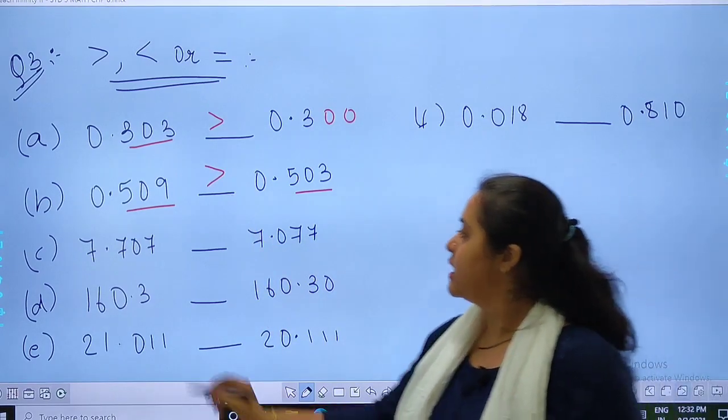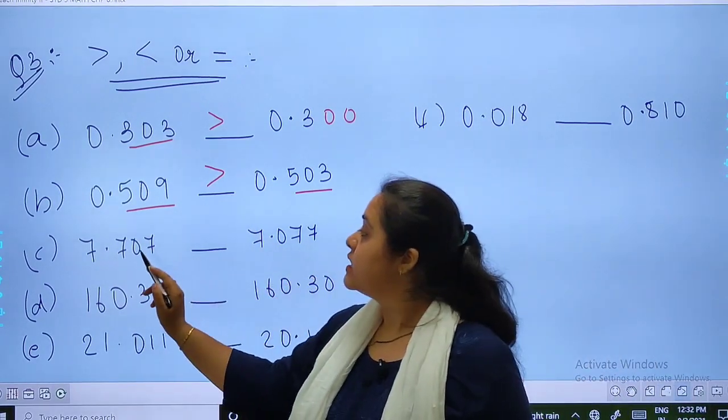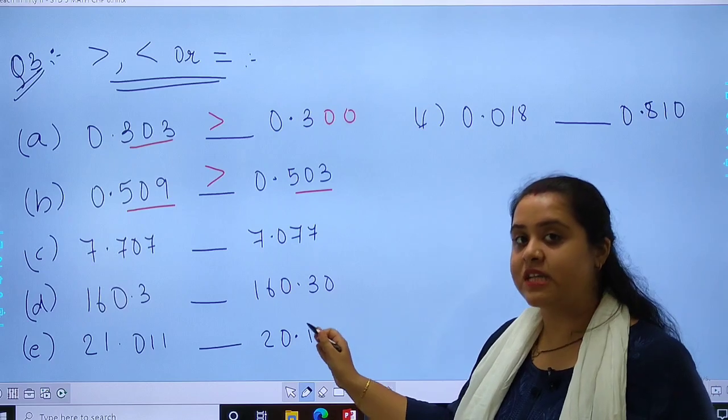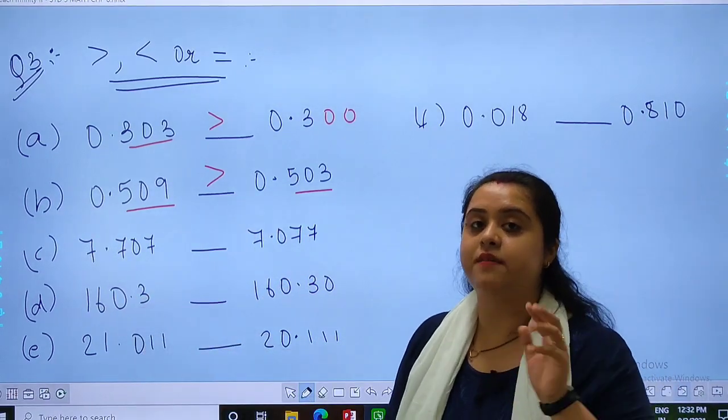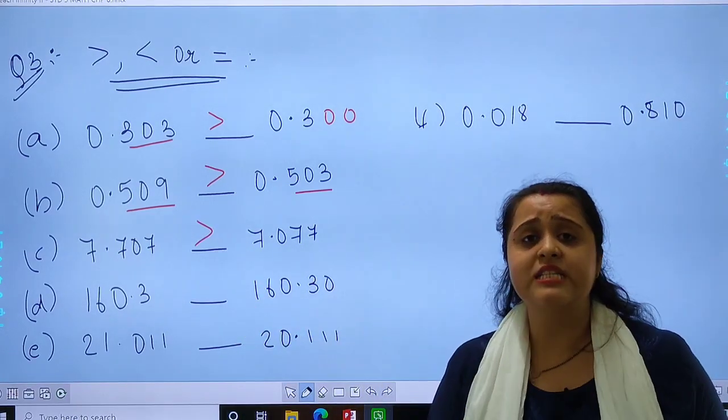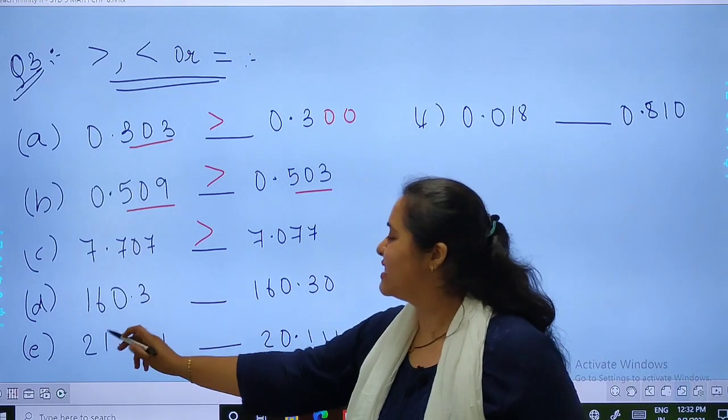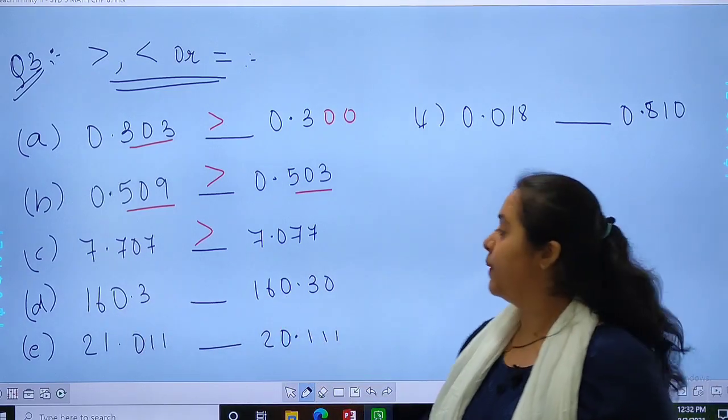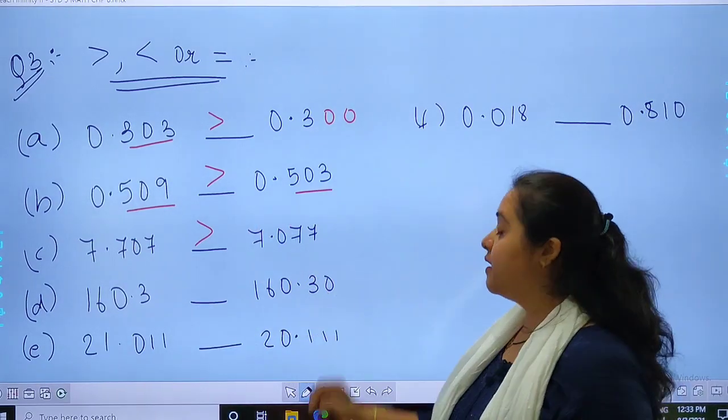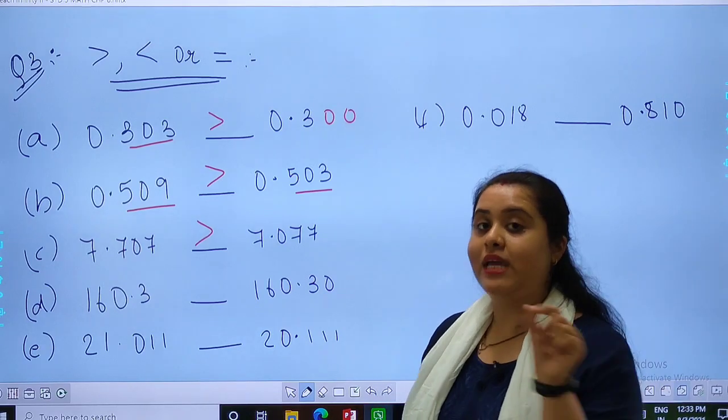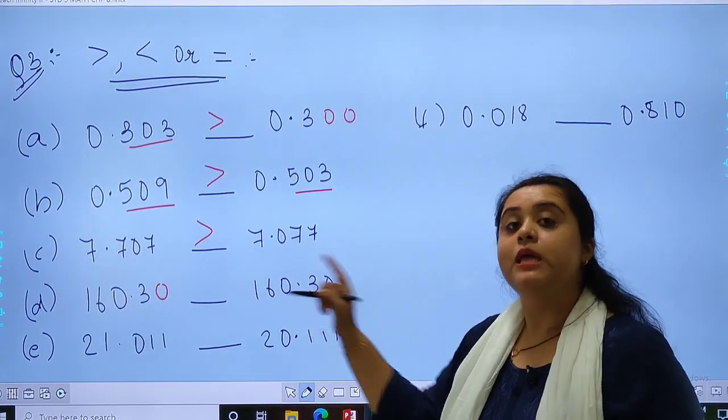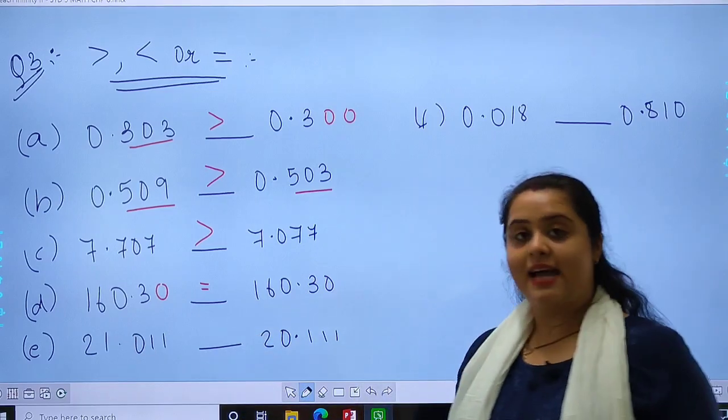In this, 7.77 is at this side, and at this side 7.70. Which one is greater? 7.77. Very good. Now in this case, D. 160.3 is same. There is one decimal in this, we have to make one decimal, that is 3. And in this, we have two decimal places, 3, 0. We will assume that here 0 is there. So in this case, they both are equal. Please solve the rest as your homework.